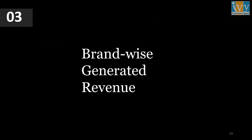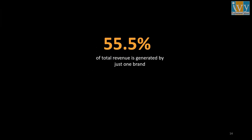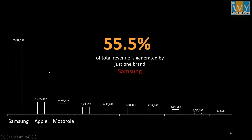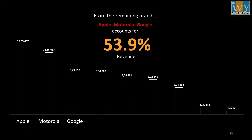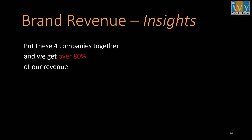Next, we have brand-wise generated revenue. From all the given brands, Samsung alone generates 55.5% of total revenue — a staggeringly high amount — which is 95 million in total. The remaining brands Apple, Motorola, and Google together account for 53.9% of revenue. If we put these four companies together, we see that over 80% of our revenues come from just these four companies.